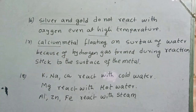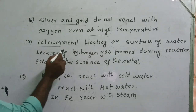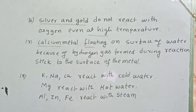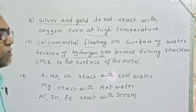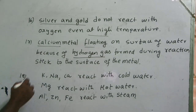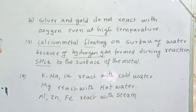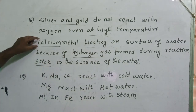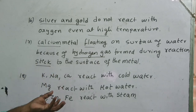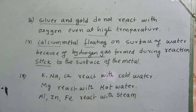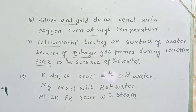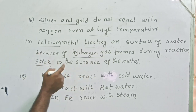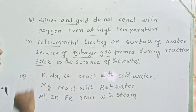Calcium and magnesium float on the surface of water because of hydrogen gas formation during the chemical reaction. The hydrogen gas sticks to the surface of the metal — since hydrogen is a weightless gas, the calcium metal starts floating on the surface of the water. Calcium floats faster compared with magnesium because it releases more hydrogen gas when calcium reacts with cold water.